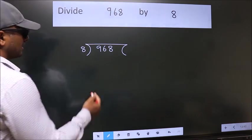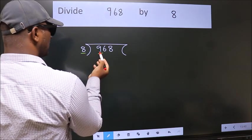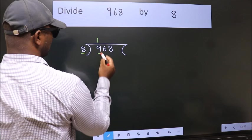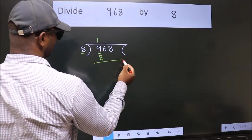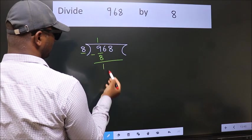Next, here we have 9, here 8. A number close to 9 in the 8 table is 8 ones, 8. Now we should subtract. We get 1.